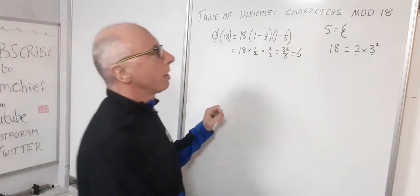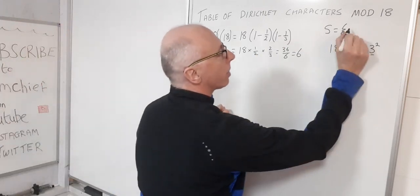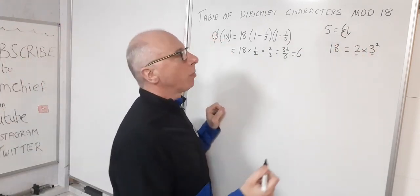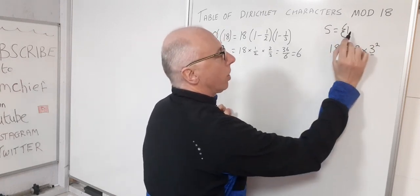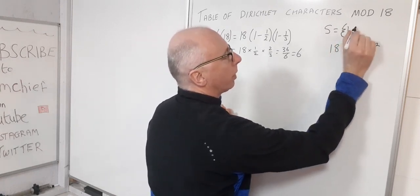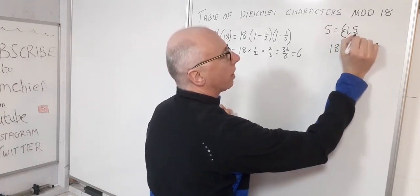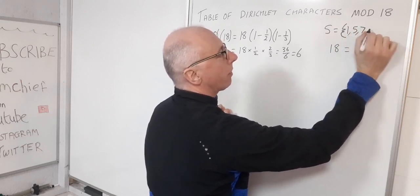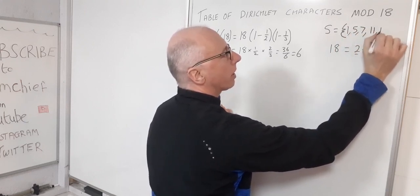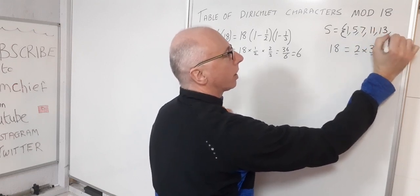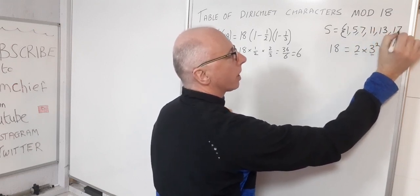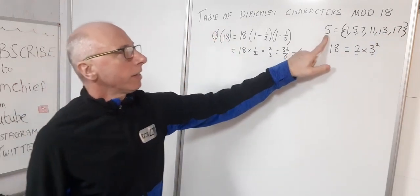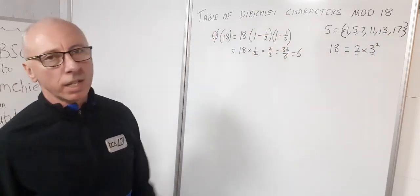Now let's go about building this set, knowing there are six elements. 1 is always included. 3 is not coprime to 18, but 5 is. 7 is coprime, 9 is not, 11 is, 13 is, 15 is not, but 17 is. So the set S is {1, 5, 7, 11, 13, 17} — those are the numbers that will help me build my table.